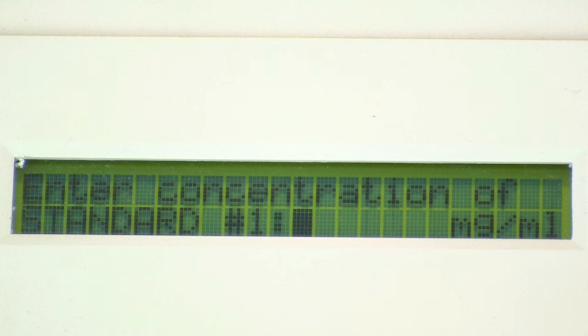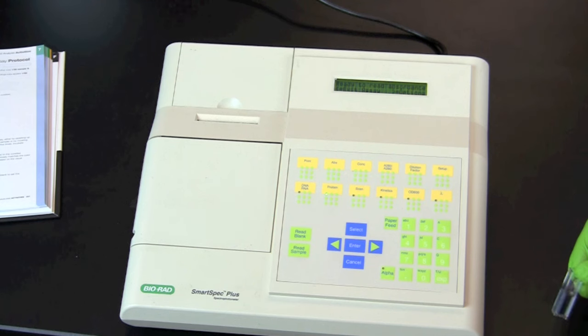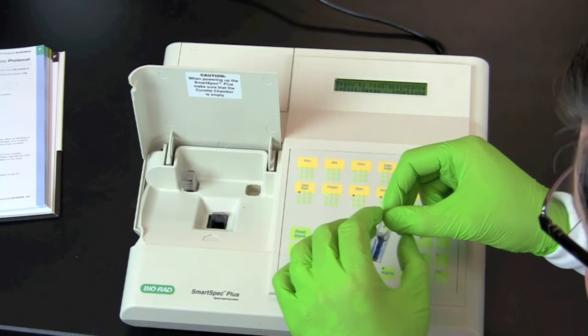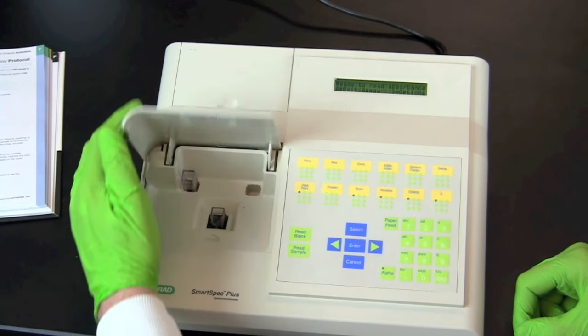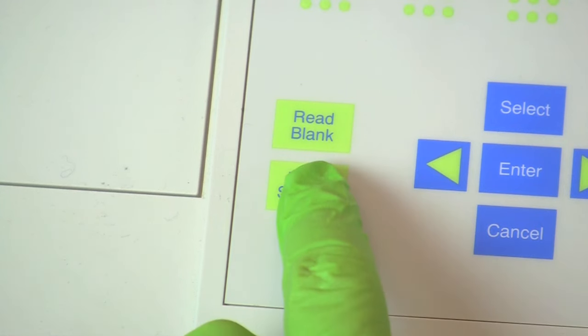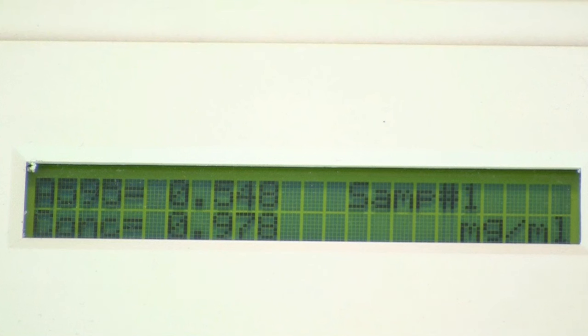If instructed, read the absorbance of the 7 protein standards and record the absorbance values. Remove the cuvette labeled blank and insert the milk sample into the spectrophotometer. Read the absorbance and record the value.